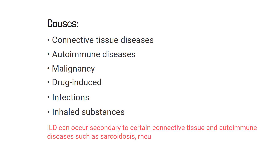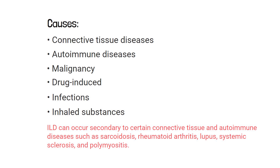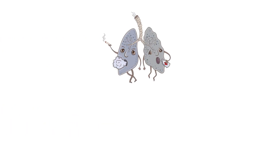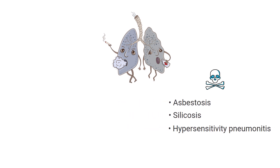sarcoidosis, rheumatoid arthritis, lupus, systemic sclerosis, and polymyositis. It is also caused by the inhalation of toxic substances such as asbestosis, silicosis, hypersensitivity pneumonitis, and other occupational and environmental toxins.